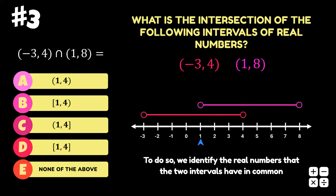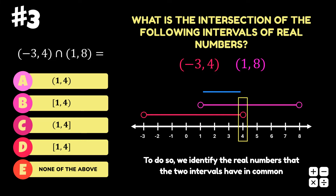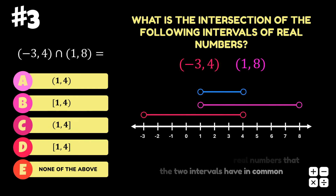We can see that the infinitely many real numbers between 1 and 4 are present in both intervals, and so we create a new interval with these numbers included, as shown here. Now, the number 1 is present in the first interval but not in the second, and the number 4 is present in the second interval but not in the first. Given that these numbers are not present in both intervals, we exclude these numbers from the new interval.